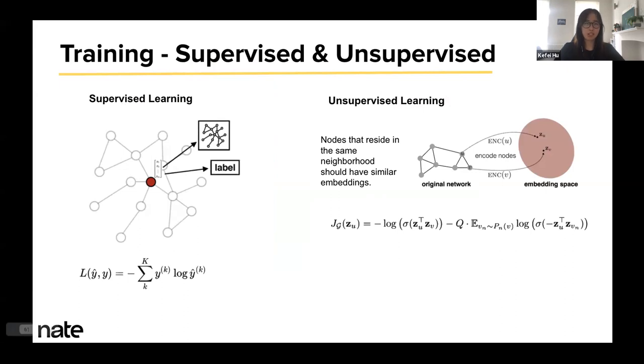Moving on to training. How do we train GraphSAGE? You can train it in both supervised learning and unsupervised learning settings. In supervised learning, you may train it to minimize the cross-entropy loss. In unsupervised learning, where you don't train with labels, you train with the assumption that nodes which reside in the same neighborhood should have similar embeddings, and nodes that are independent should be far away from each other in the embedding space.